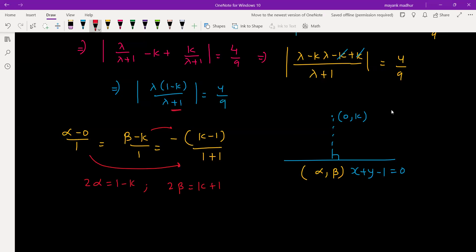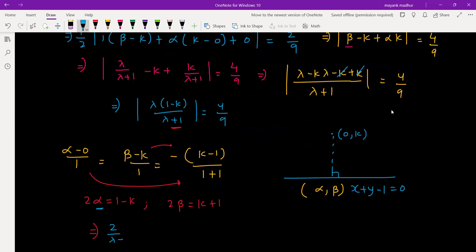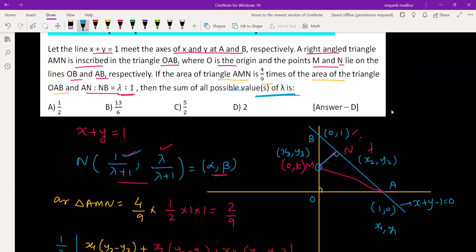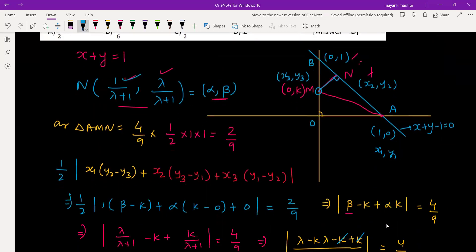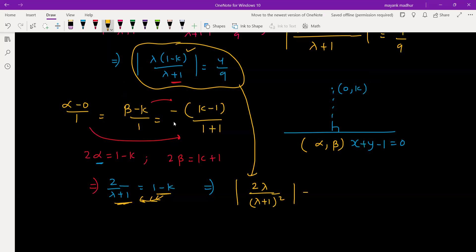Now we use this: alpha is 1 by lambda plus 1, so 2 by lambda plus 1 is equal to 1 minus k. We have the relation 1 minus k equals 2 by lambda plus 1, which we can put here. So 2 lambda by lambda plus 1 is equal to 4 by 9.